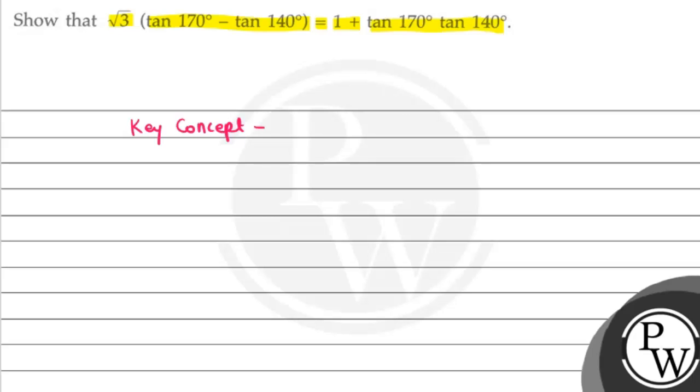The key concept is tan(A - B) is equal to—you have the formula—tan A minus tan B upon 1 plus tan A tan B.